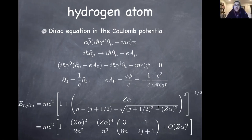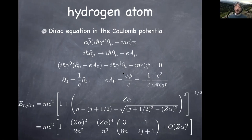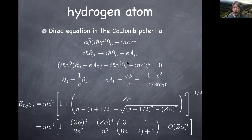A student asks: are we only considering the time component of the vector potential here, not the spatial components? Yes, here we're only considering the Coulomb potential — that's why I only have the time component A-naught and not the spatial component. If you wanted to apply a magnetic field to the hydrogen atom and study the Zeeman effect, you'd obviously need to put in the vector potential. You know exactly what to do: replace del-mu in a Lorentz-covariant fashion to del-mu minus eA-mu, so the covariant derivative handles both the scalar potential and the vector potential in a unified manner.